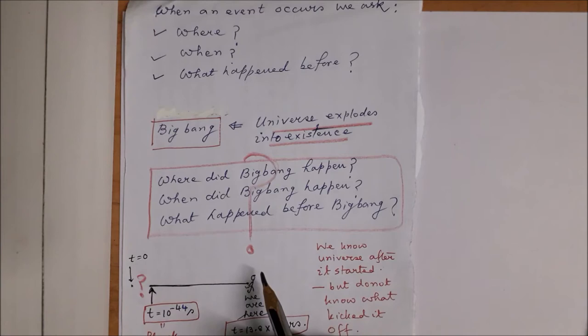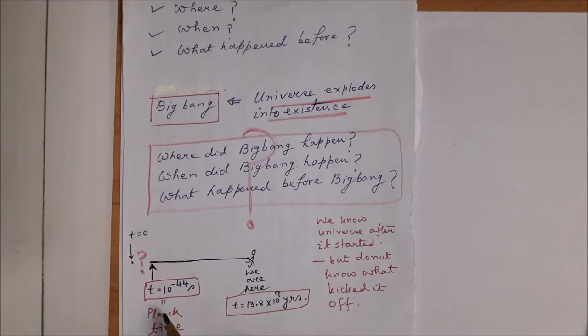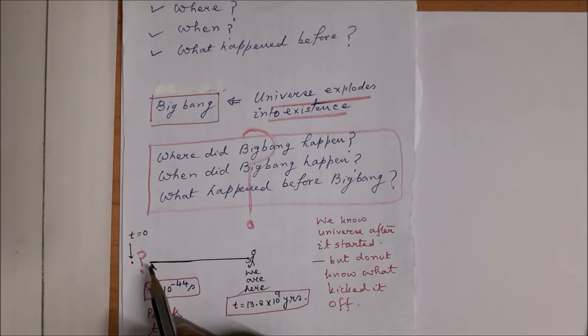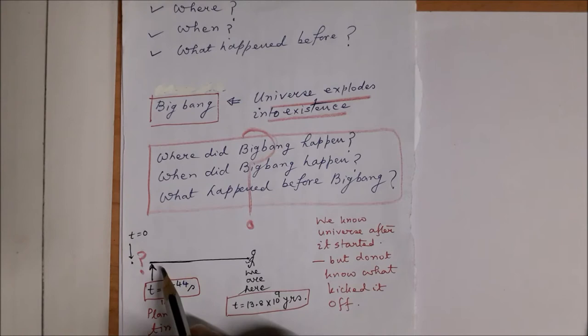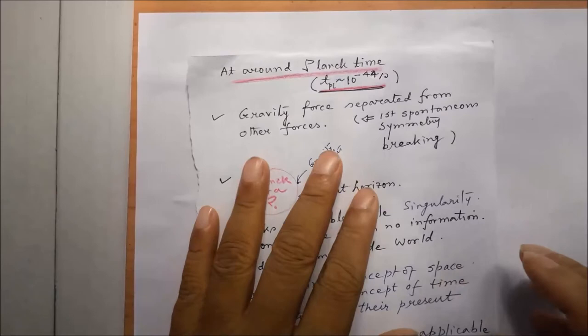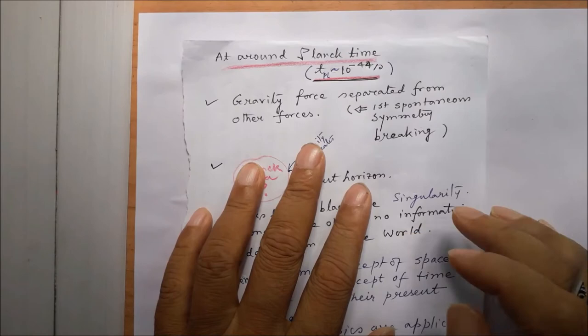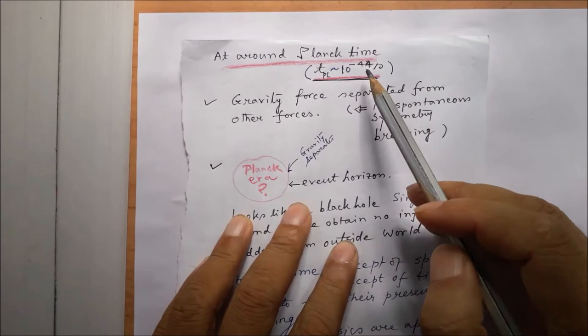What we know is what happened after the universe kicked off. Something happened in the Planck era which is called the Big Bang, but our knowledge is limited to events after that, starting from 10 to the power minus 44 seconds up to the point of time where we are presently. Though we have some knowledge about things in this period of time, we have no inkling about the Planck era. At Planck time, which is 10 raised to the power minus 44 seconds, gravity may have separated from other forces.